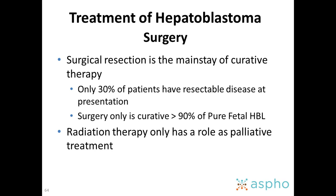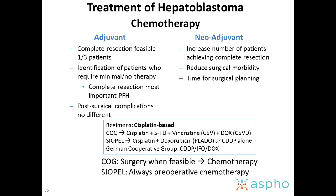Surgery is the mainstay of curative therapy. Only 30% of patients have resectable disease at presentation. Surgery alone can be curative in 90% of patients with pure fetal hepatoblastoma. Radiation therapy has no real role in hepatoblastoma, only as palliative therapy. Chemotherapy has two roles: adjuvant after surgery, and neoadjuvant when you start with chemotherapy before surgery. Upfront surgery helps identify patients who may not require chemotherapy. Neoadjuvant chemotherapy increases the number achieving complete resection, reduces surgical morbidity, and allows more time for surgical planning. Both options are valid based on team expertise.